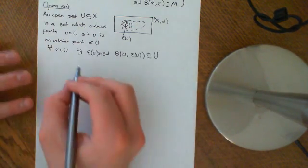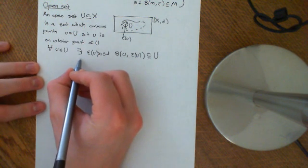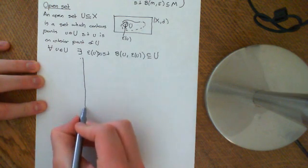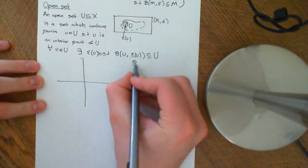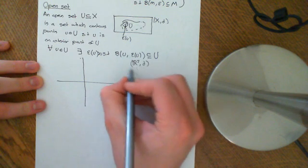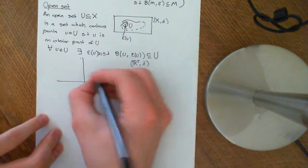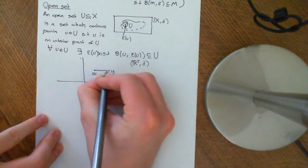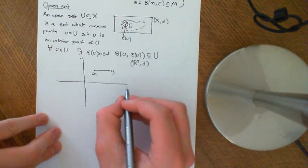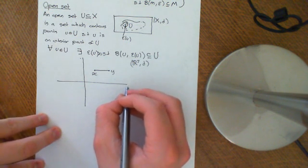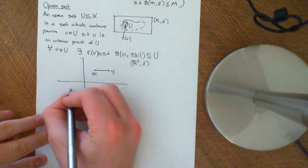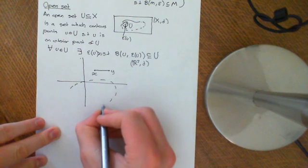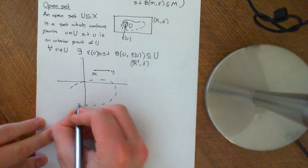So let's have a look at this concept in R2, because it's easier to draw. We'll work with R2 with the usual Euclidean metric, so we're dealing with the Euclidean plane, where the distance between two points X and Y is the usual metric — i.e. it's the length of the line between them. If I draw an open set, you draw it with the dashed lines to show that it does not include the boundary.